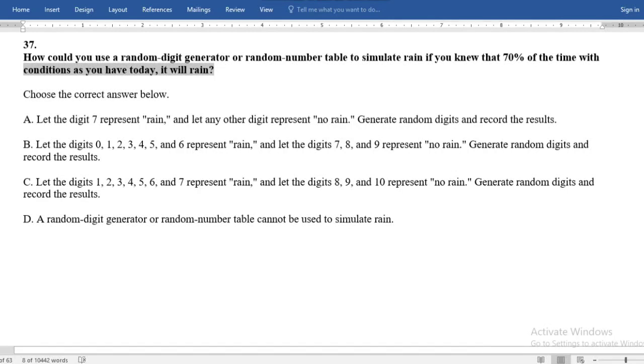We have 10 digits: 1, 2, 3, 4, 5, 6, 7, 8, 9, 10. And if there is 70% rain, then these represent rain. And let 8, 9—8, 7, 8, 9—represent no rain. Then I did it and record the results.